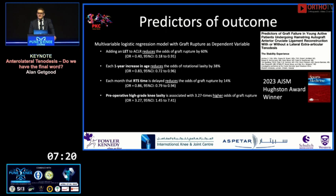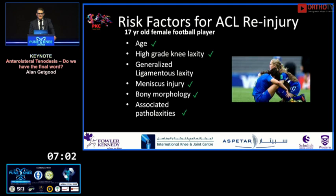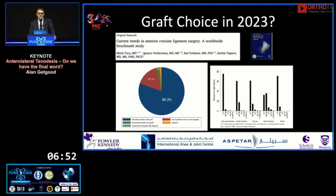Pre-operative high-grade knee laxity — whether high-grade anterior laxity or rotatory laxity — creates over three times higher odds of graft rupture. Posterior tibial slope is also unsurprising: each one-degree increase raises the odds of graft rupture by 15%. Going back to our 17-year-old: young age, high-grade laxity, meniscus injury, bony morphology, associated pathological laxity — should we add an LET?